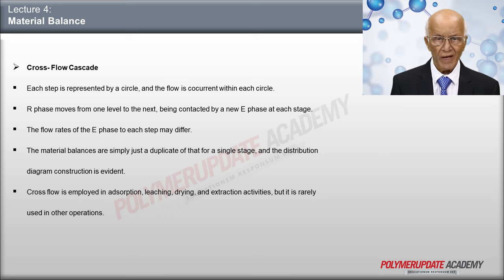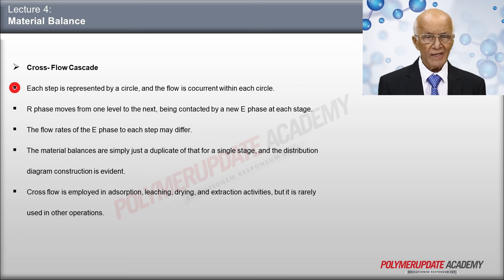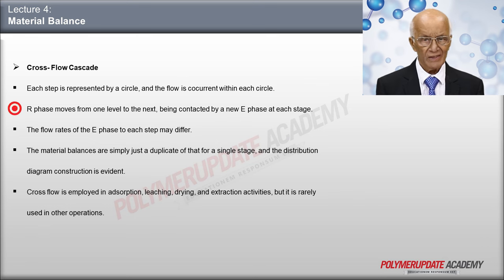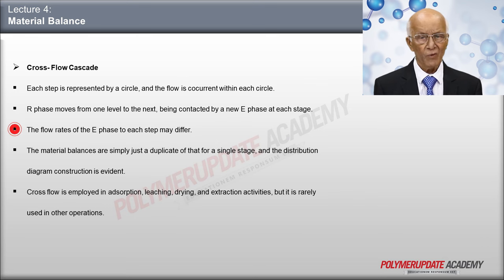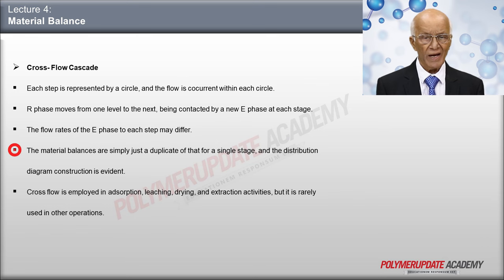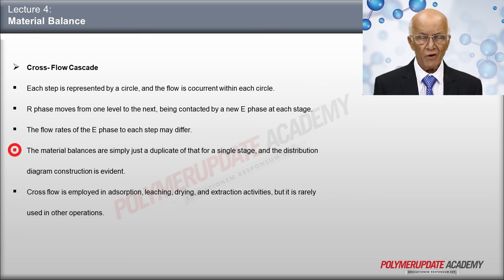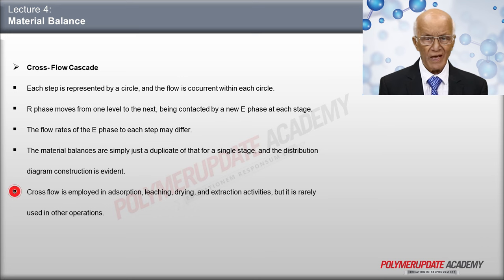First, let us look at a cross-flow type cascade. Each stage is represented by a circle, and within each circle the flow is co-current. The R phase flows from one stage to the next, being contacted in each stage by a fresh E phase. There may be different flow rates of E phase to each stage. The material balances are merely a repetition of that for a single stage, and the construction of the distribution diagram is obvious. Cross-flow is used sometimes in adsorption, leaching, drying, and extraction operations, but rarely in any other operations.